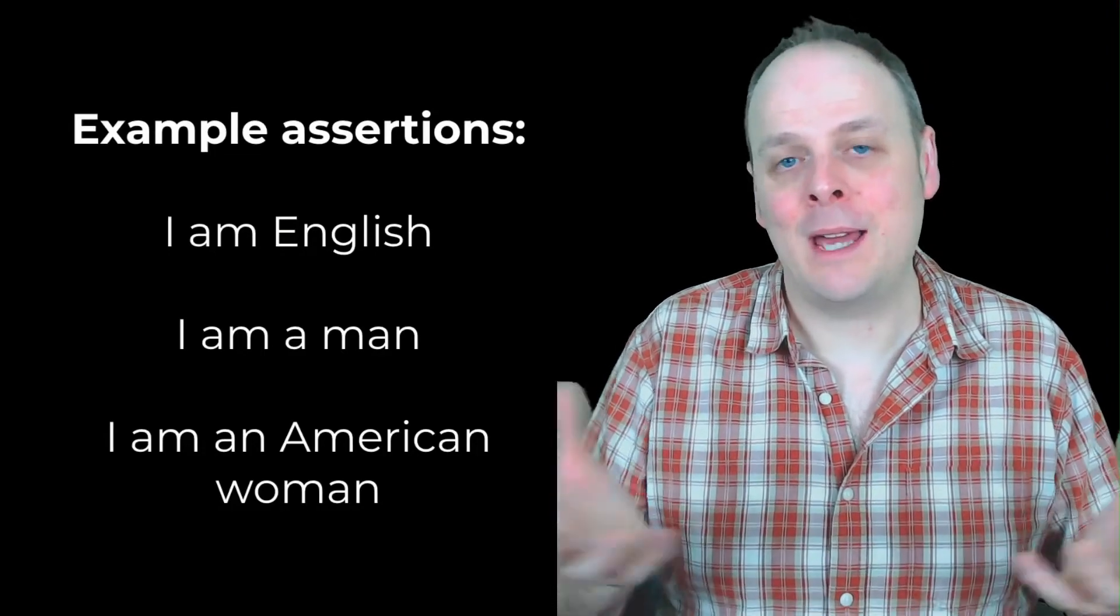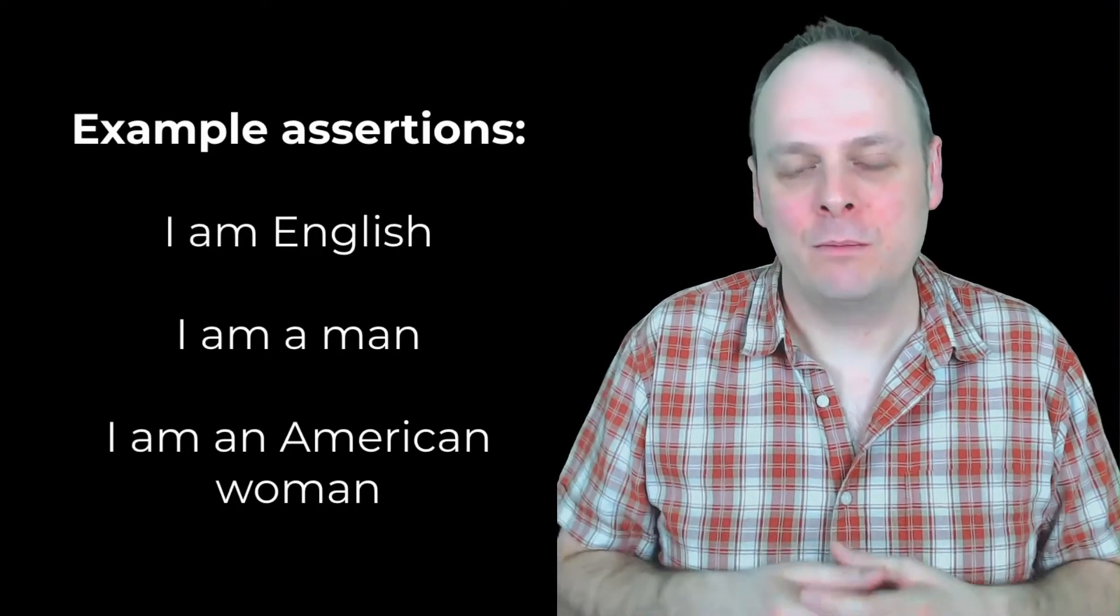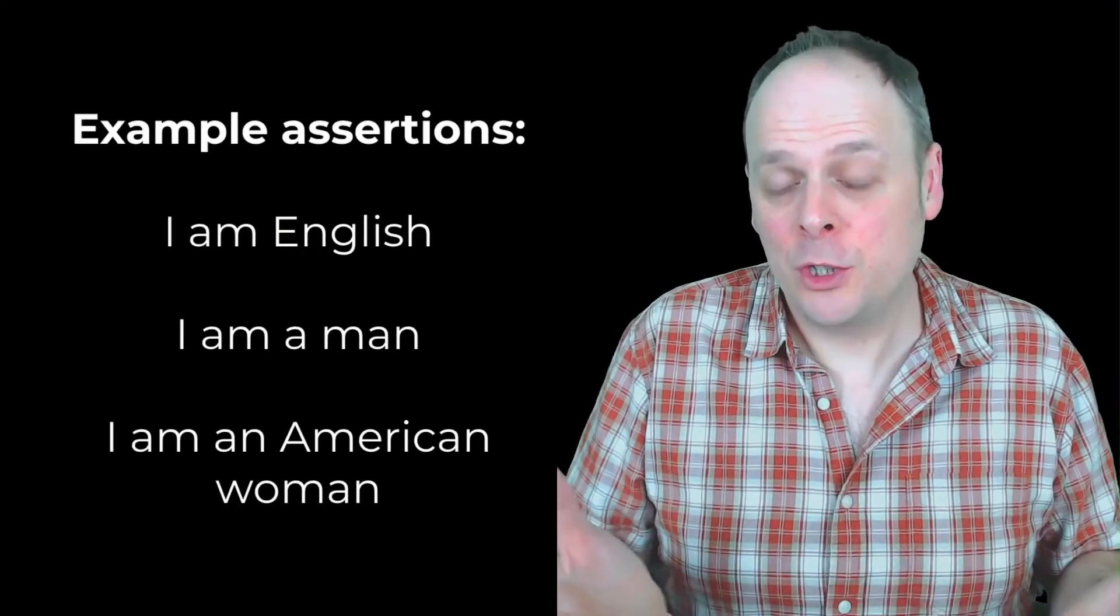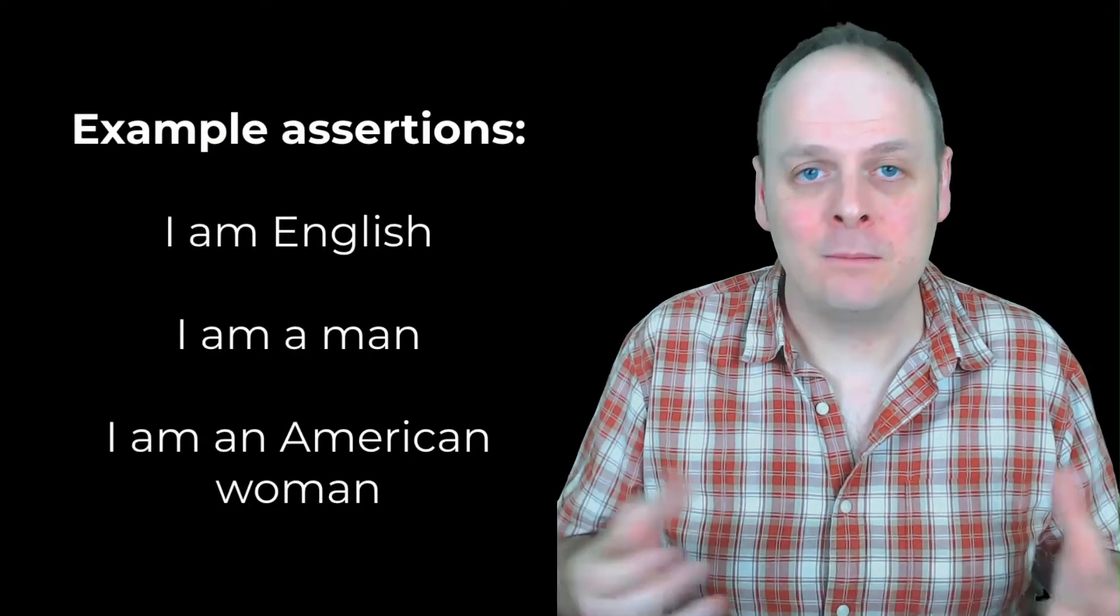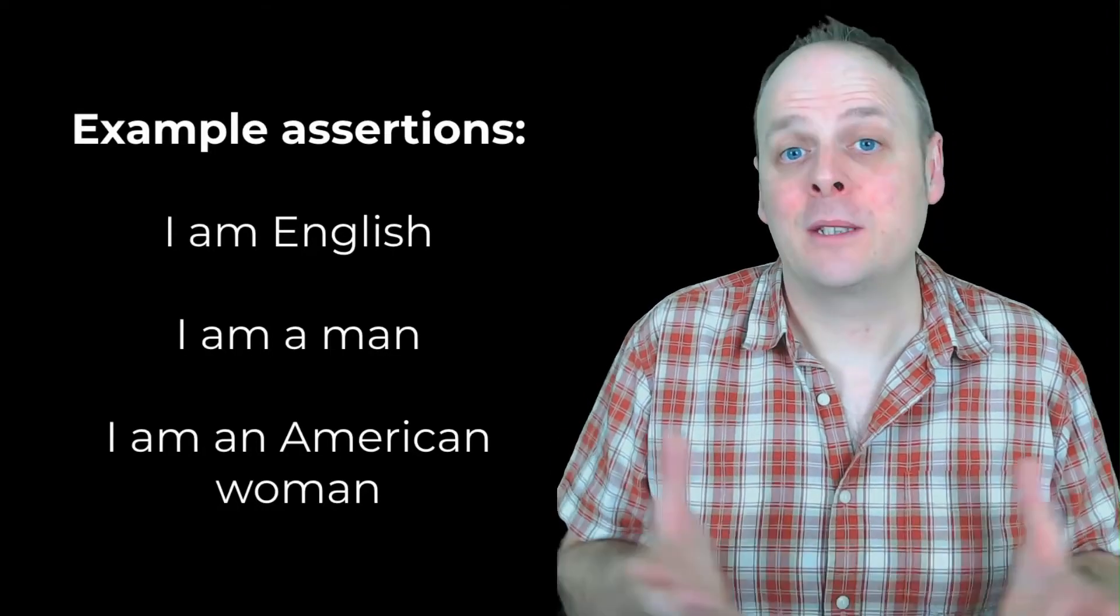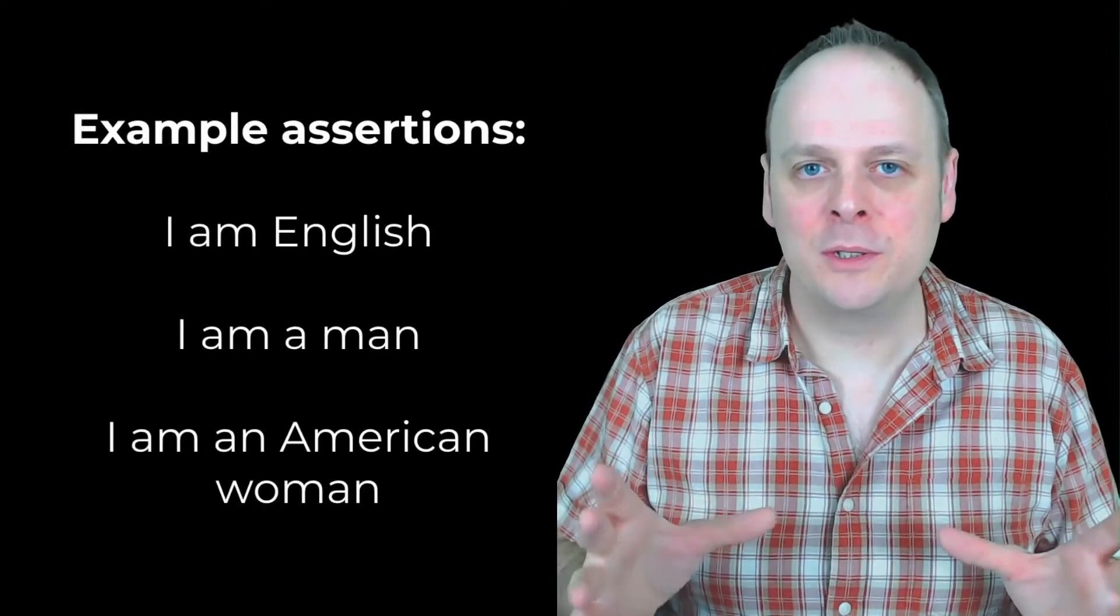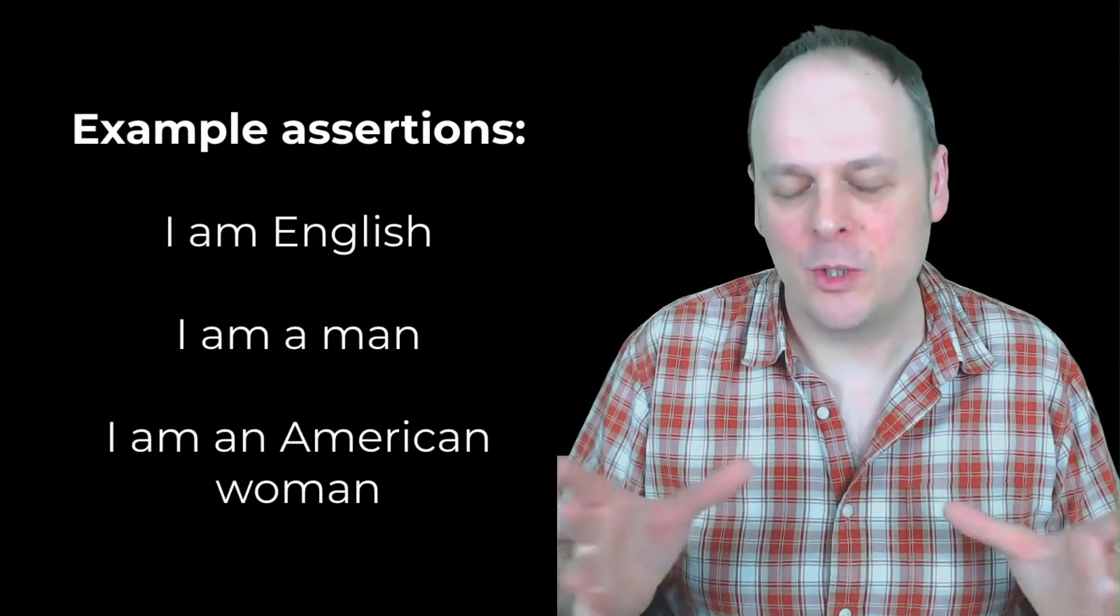A sample assertion could be I am English, and that's true. Another assertion is I am a man. That's also true. I happen to be a man of male gender. So those two assertions are facts about me. I am English and I am a man. Those are assertions.